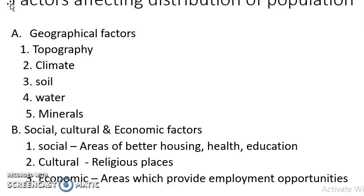Next important geographical factor is minerals. Areas which have mineral deposits are more populated. For example, South Africa — diamond mines are there — and oil wells, presence of oil in Middle East countries — people prefer to live there because it gives them employment opportunities and use of the minerals. So people prefer to live there. These are the geographical factors: topography, climate, soil, water, and minerals.